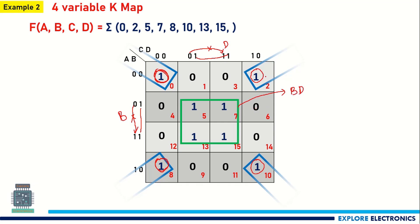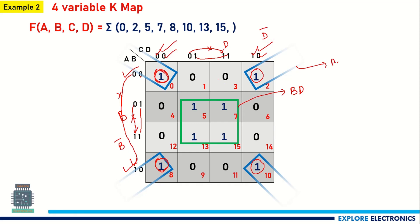For the blue corner group, consider the four corner cells: vertically A changes (neglect A), B is 0 (so B-bar); horizontally C changes (neglect C), D is 0 (so D-bar). This corner group gives B-bar·D-bar. The final expression is B·D + B-bar·D-bar.